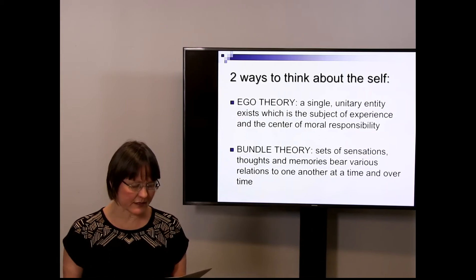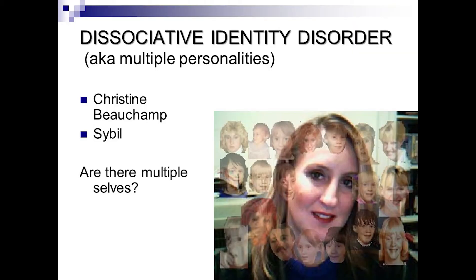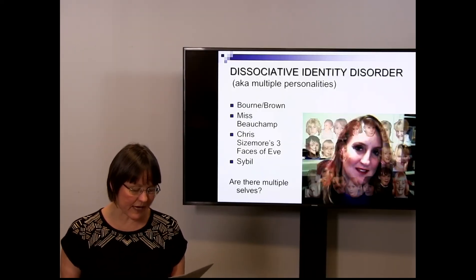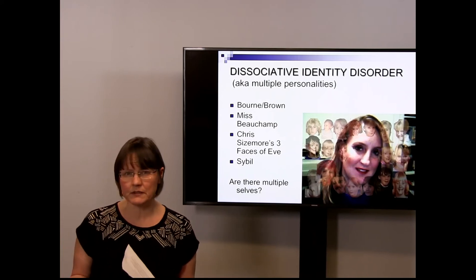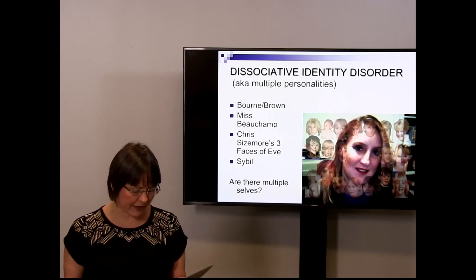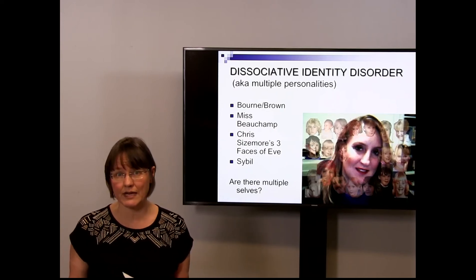The first of the real cases is dissociative identity disorder, also known as multiple personalities. Several cases are described by Blackmore: Ansel Bourne who turns into Mr. Brown, Christine Beauchamp, the three faces of Yves, Sybil. These are the more famous dissociative identity disorder cases. One curious thing is that it appeared for the first time in the literature in the late 1800s, then basically disappeared for about a century, and then reappeared in the 70s or 80s.